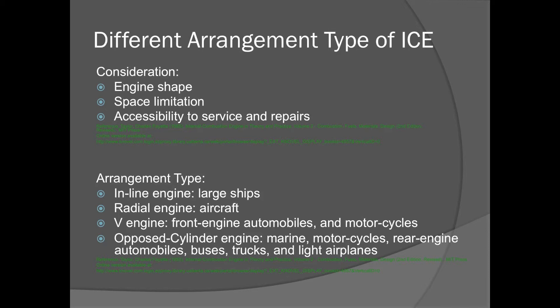Inline engine, which is mainly used for large ships. Radial engine, which is mainly used for aircraft. V engine, which is mainly used for front engine automobiles and motorcycles. The last one, opposed cylinder engine, which is mainly used for marines, motorcycles, rear engine automobiles, buses, trucks, and light airplanes. All the information on this slide is from U of A online database.